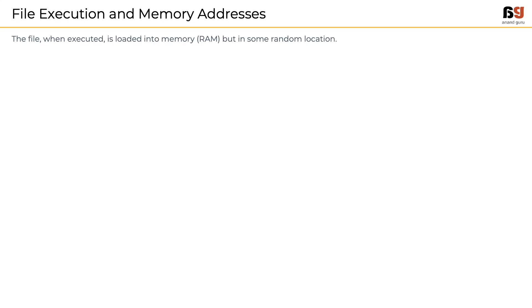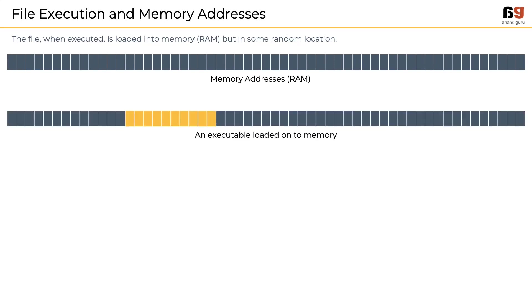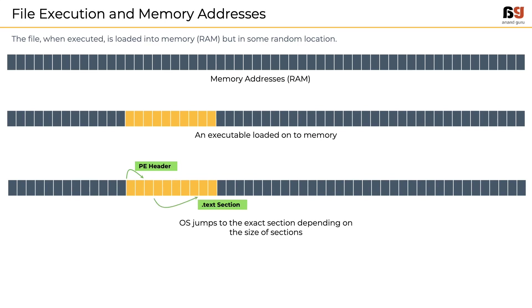Let's get back to the technical side and see how this correlates in file execution. When a file is executed, it is loaded into memory — that is, RAM — at some random location. When an executable is loaded onto the memory, the operating system needs to understand where to find the instructions to run. The size of a specific section tells the computer where to find the next part of the file. It is worth noting that all memory locations are mentioned in hexadecimal format.